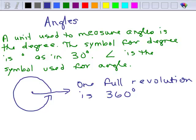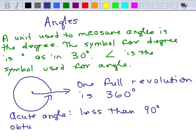Now, we could have angles of all sizes. We have what's called an acute angle that would be less than 90 degrees. And an obtuse angle is between 90 degrees and 180 degrees.